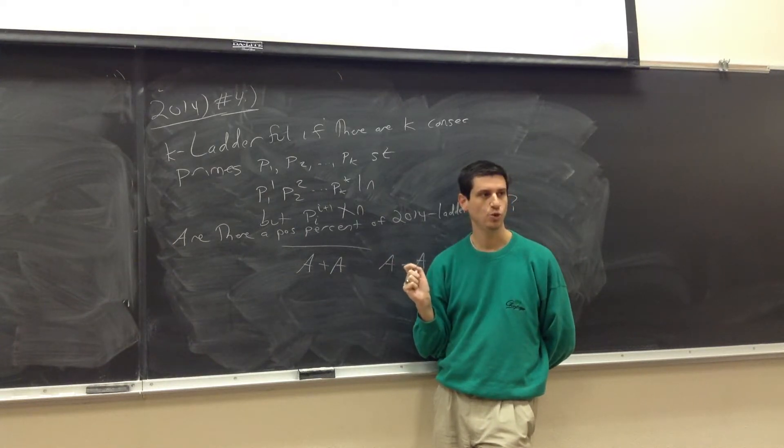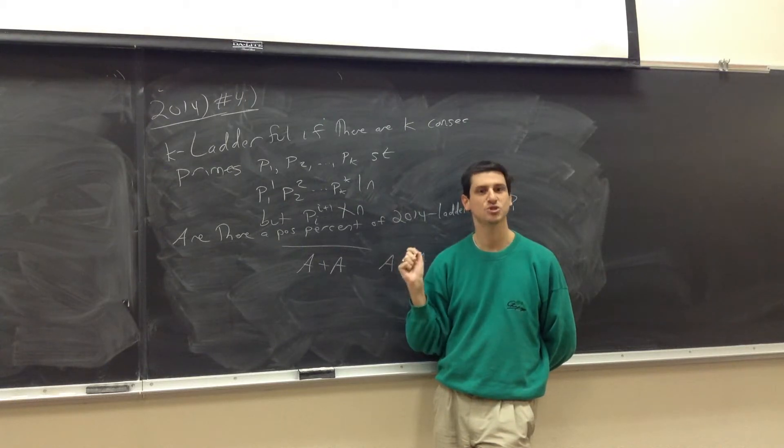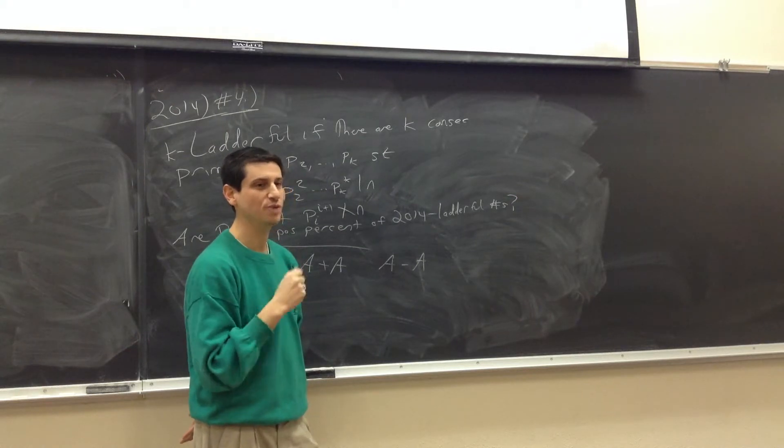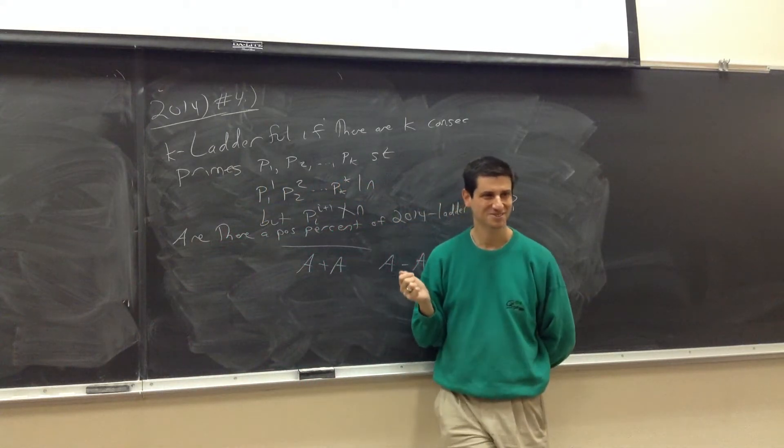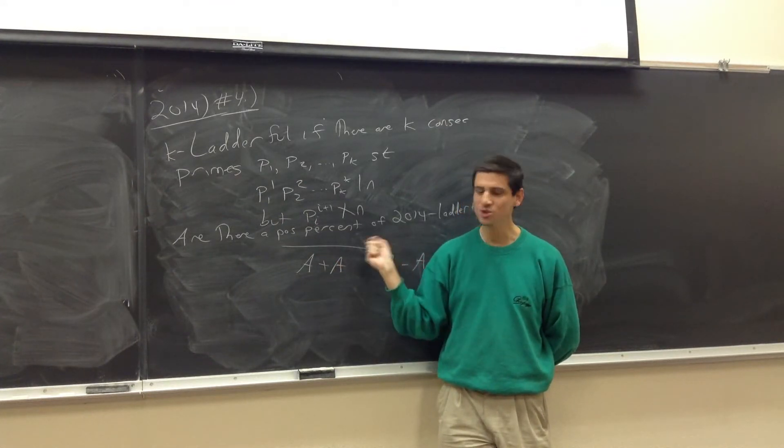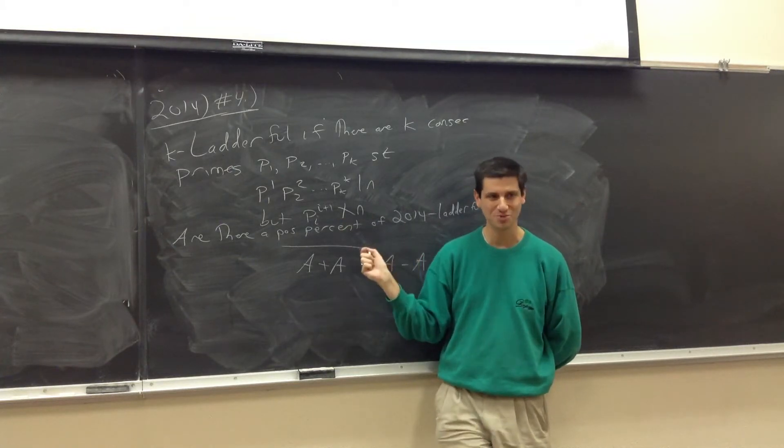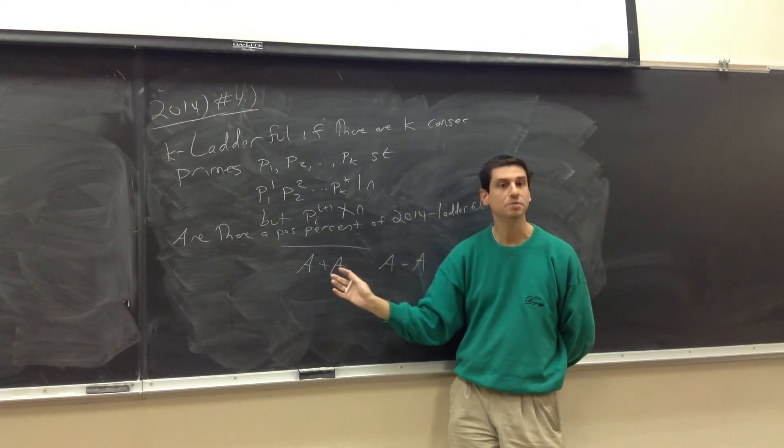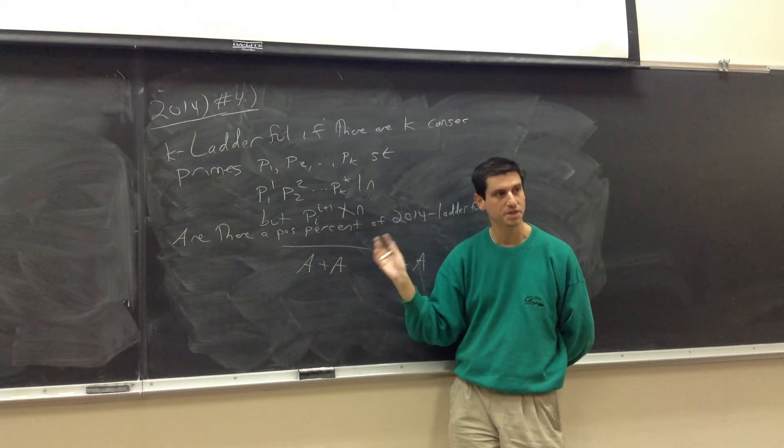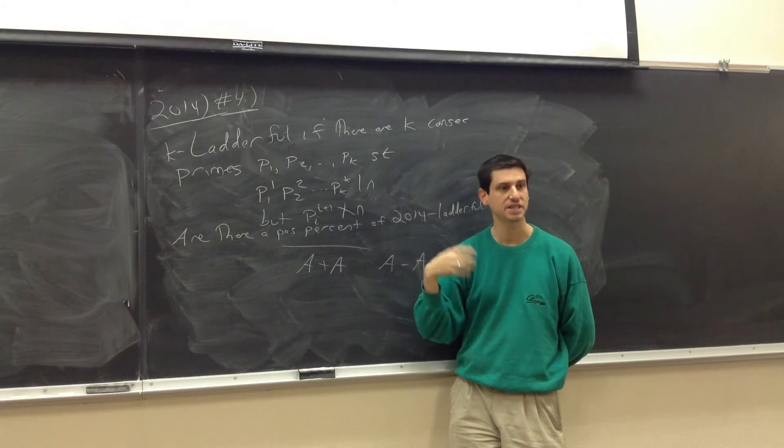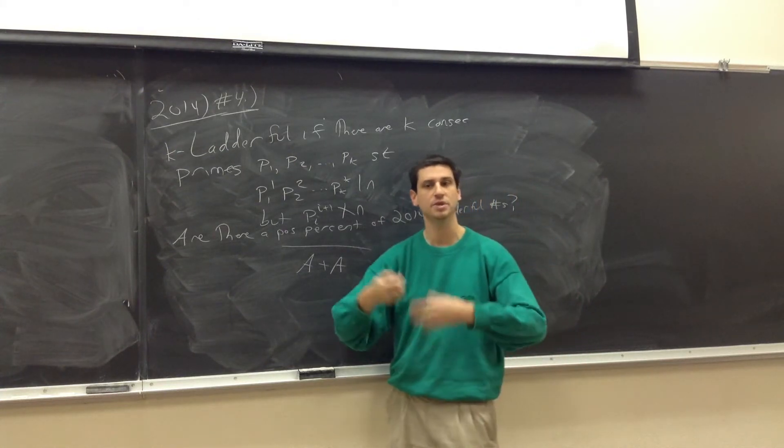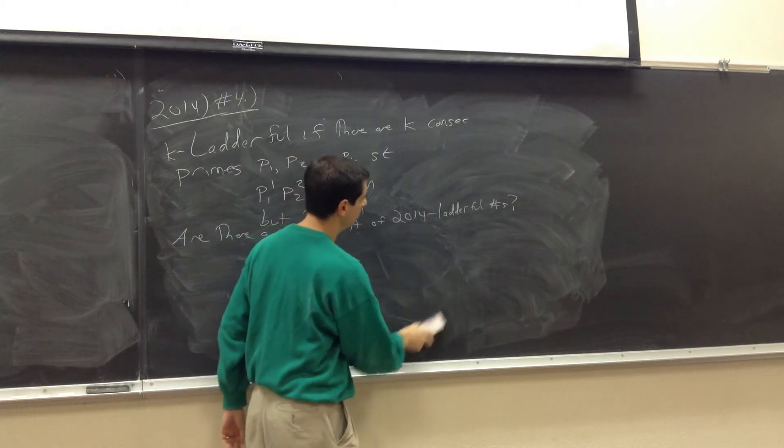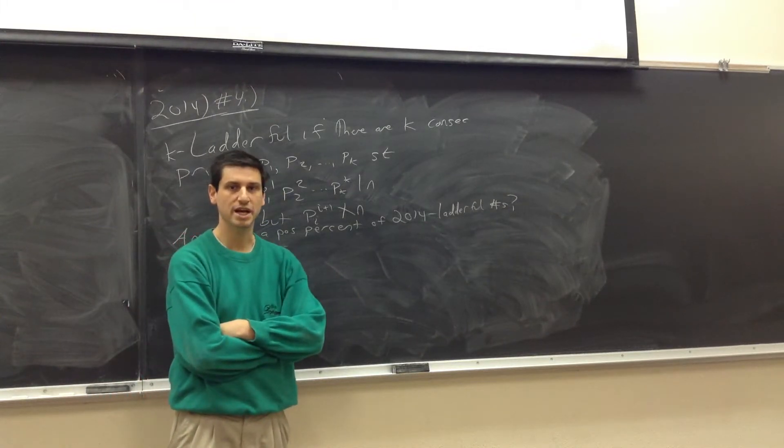It was conjectured that in the limit, as A gets larger and larger, if you choose each element to be in your set A with probability 1 half, then in the limit, every set with probability 1 will have more differences than sums. It turns out this conjecture is wrong. A positive percent of the time, you have more sums than differences. So one of the big things that goes on in mathematics is counting how often something happens. What fraction of the time?